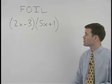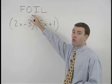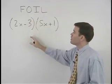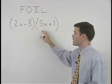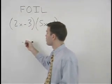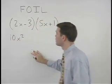To multiply these two binomials together, let's use the FOIL method. The product of the first terms is 2x times 5x or 10x squared, plus the product of the outer terms which is 2x times positive 1 or positive 2x.